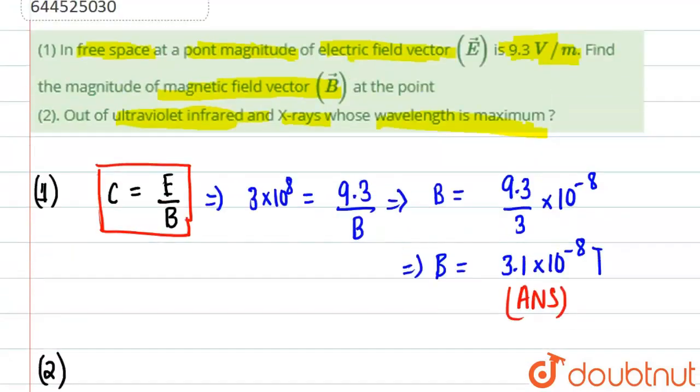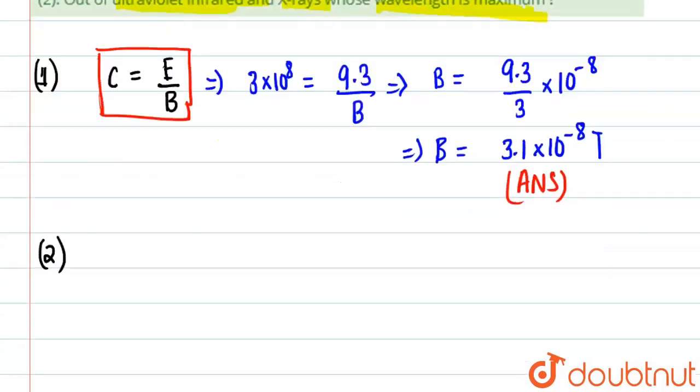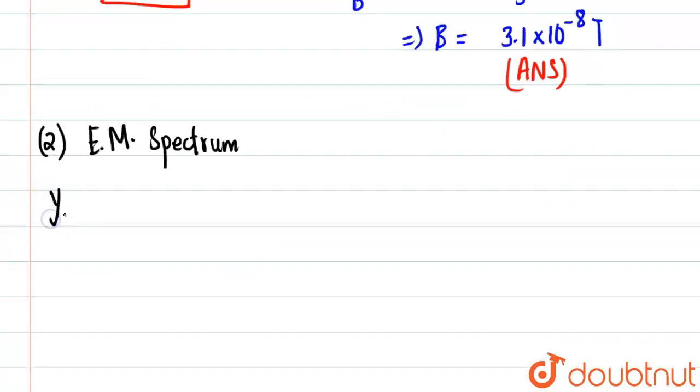The second part says ultraviolet, infrared and X-rays. So from the electromagnetic spectrum, the wavelength of light is defined by: firstly gamma rays, then X-rays, then UV rays, then visible rays...